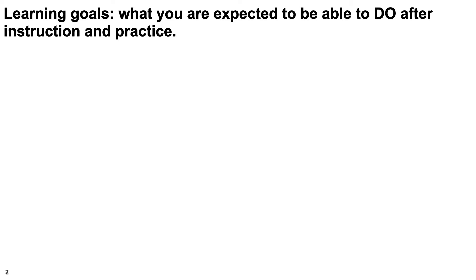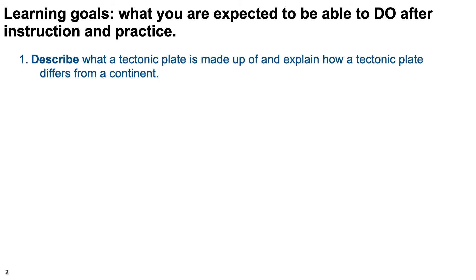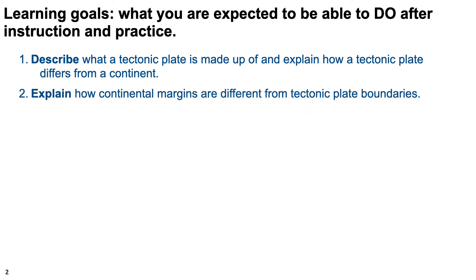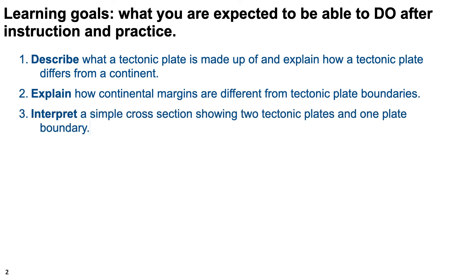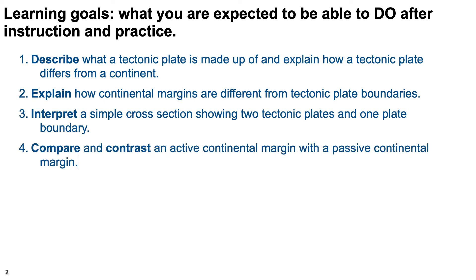The goals for this video tutorial are: describe what a tectonic plate is made up of and explain how a tectonic plate differs from a continent. Explain how continental margins are different from tectonic plate boundaries. Interpret a simple cross-section showing two tectonic plates and one boundary. Compare and contrast an active continental margin with a passive continental margin.